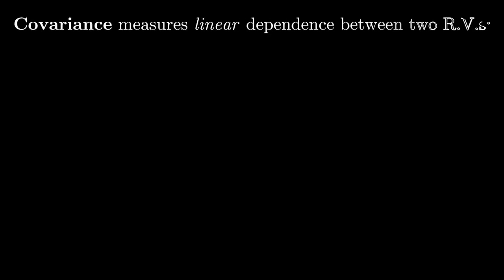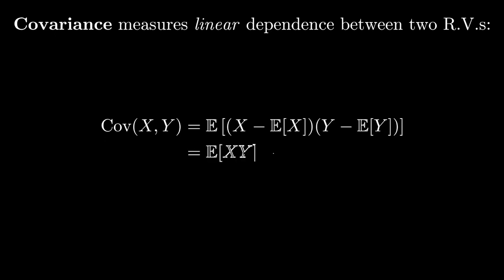These are general properties of dependence and independence, but there are certain kinds of statistical relationships that warrant specific attention. In particular, we care a lot about the idea of linear dependence, which is captured through the idea of covariance. Intuitively, you can think of covariance as measuring whether or not two random variables both deviate from their means in a coincident kind of way. If they both tend to be greater than their mean or less than their mean at the same time, then the covariance will be positive. On the other hand, if when one of them is above its mean, the other one tends to be below its mean, then the covariance will be negative.